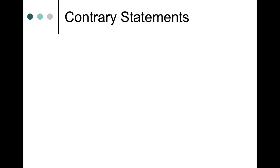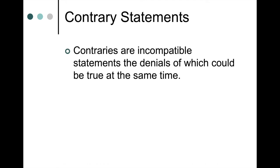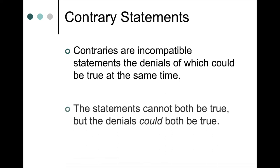And then we have contrary statements. Contrary statements are another variety of incompatible statements. Contraries are incompatible — the statements cannot both be true at the same time — but their denials could be true at the same time. So contraries are incompatible statements, but their denials are not incompatible. The statements cannot both be true at the same time, but the denials could both be true at the same time.